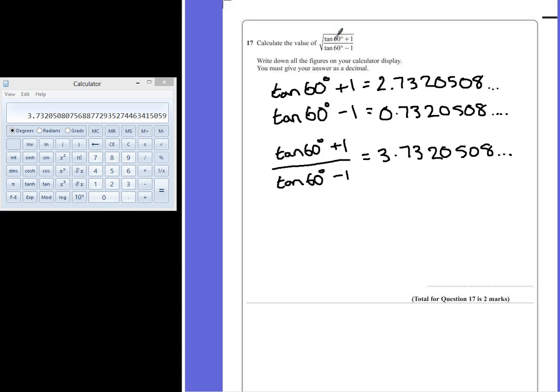Our final step is to remember that we're looking for the square root of this value. So the square root of tan 60 plus 1 divided by tan 60 subtract 1. We've got our number in our calculator already so let's just hit the square root button which gives us an answer.